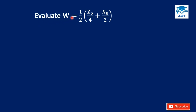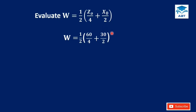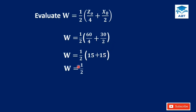We evaluate W equals one-half of the bracket Z₀ over 4 plus x₀ over 2. So W equals one-half of 60 over 4 plus 30 over 2, which is one-half of 15 plus 15, which is one-half of 30. So W equals 15 centimeters.